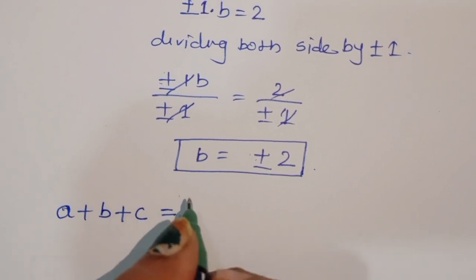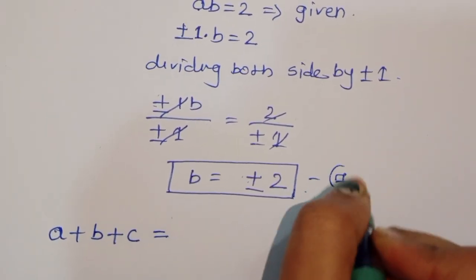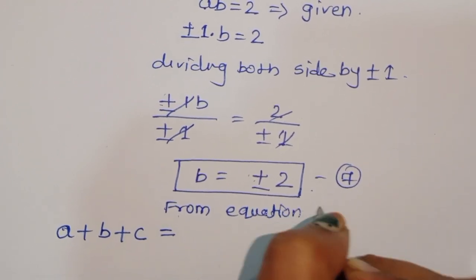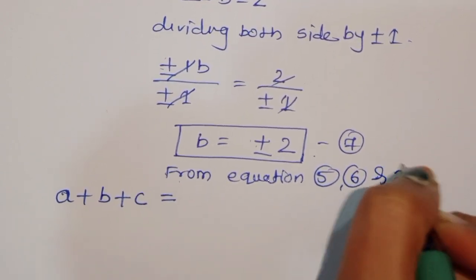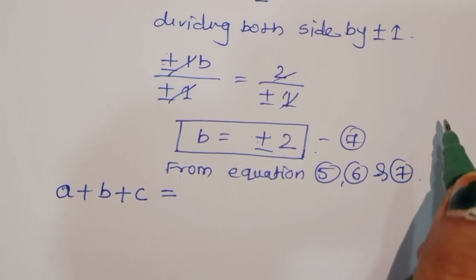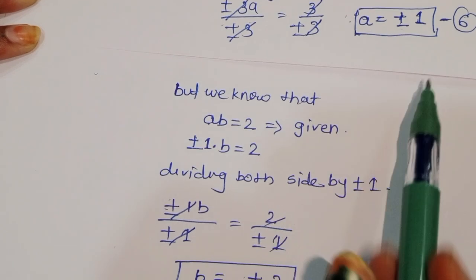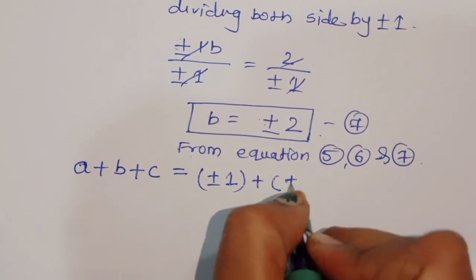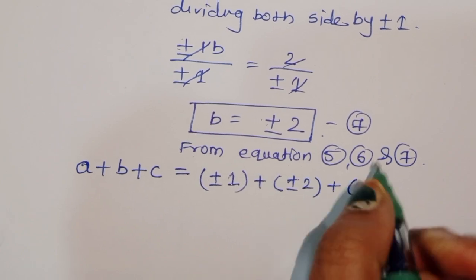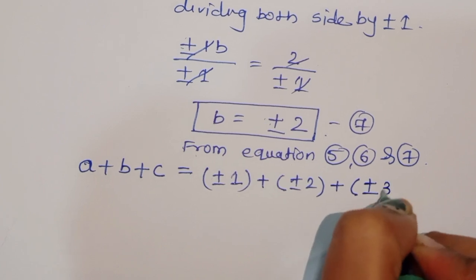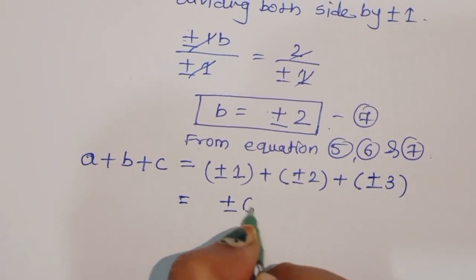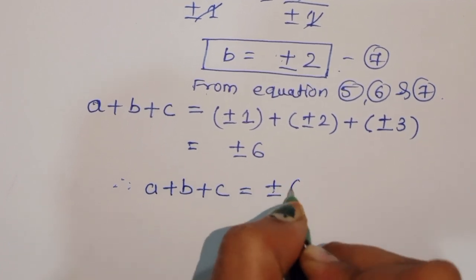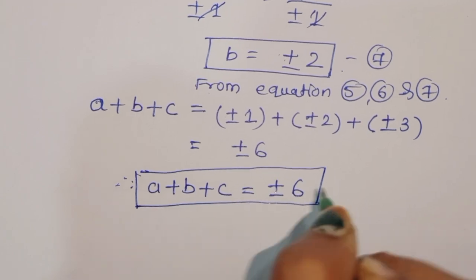So we have to find the value of a plus b plus c. From equation 5, c equals plus or minus 3; from equation 6, a equals plus or minus 1; from equation 7, b equals plus or minus 2. Therefore, a plus b plus c equals plus or minus 1 plus plus or minus 2 plus plus or minus 3, which equals plus or minus 6. This is the solution. Thank you.